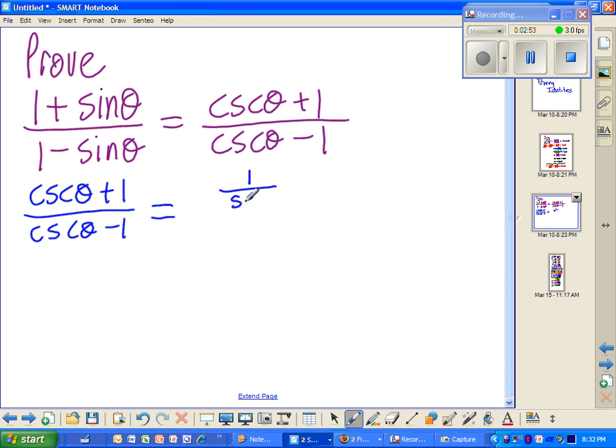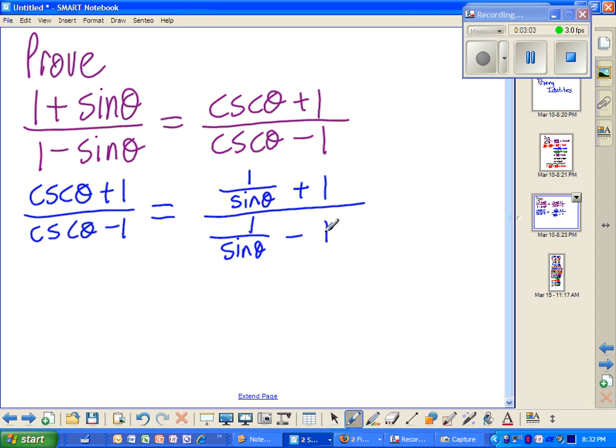All the cosecants with one over sine of theta. Now, a classic thing that students do that are incorrect is that they try to cancel these out. Can't cancel these out because these belong to the whole of the denominator. So what we need to do is find the common denominator for the top and find the common denominator for the bottom.